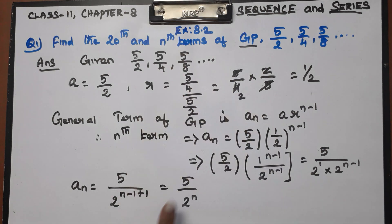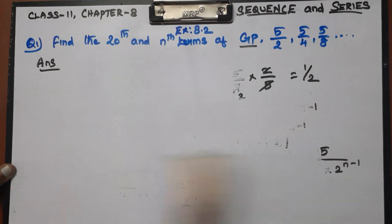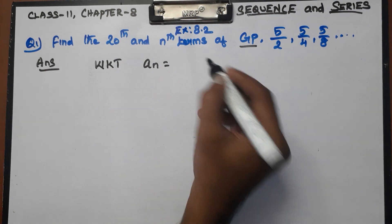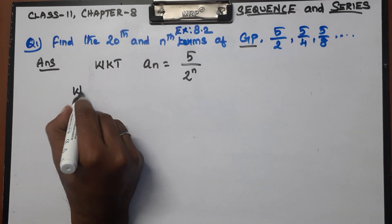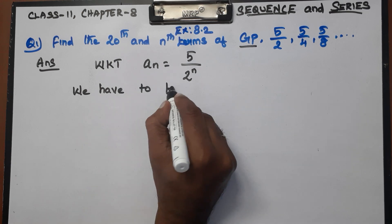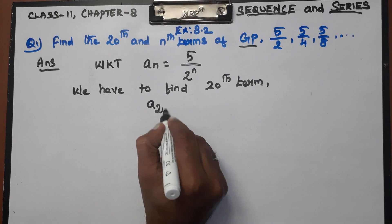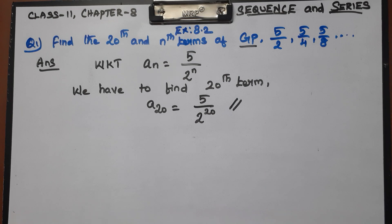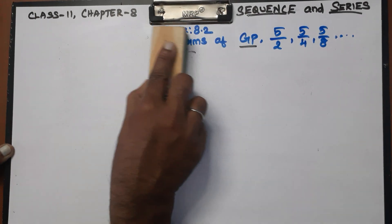Now we find the 20th term. We know the nth term is An = 5/2^n. So A20 = 5/2^20. This is the 20th term. It is very simple.